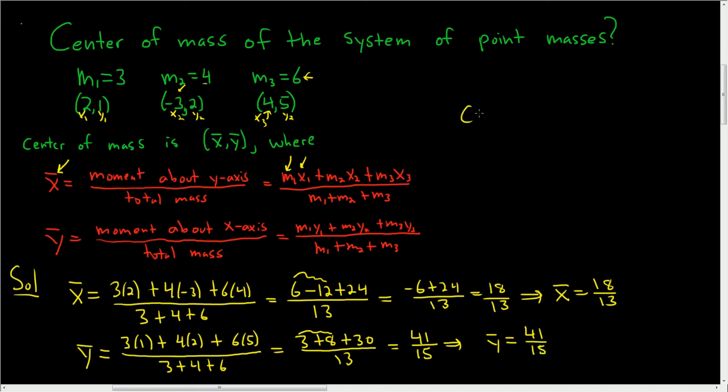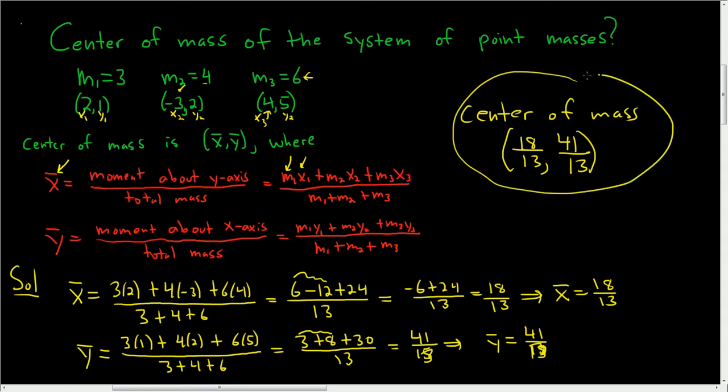So the final answer, the center of mass, is 18 divided by 13, and then 41, whoops, that's a 3, 41 divided by 13. Easy to mess up with all of these numbers. So that's a 13, 13.